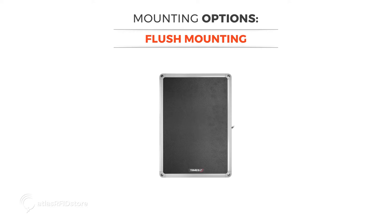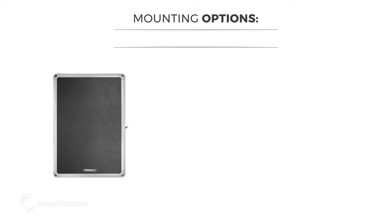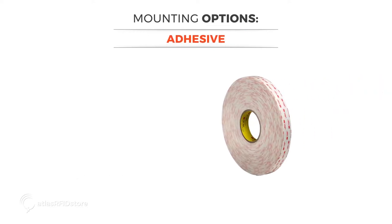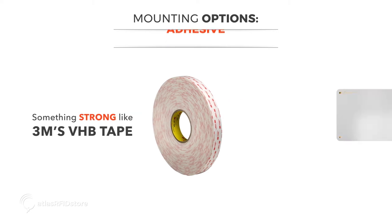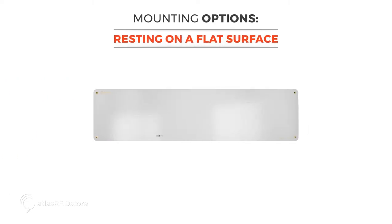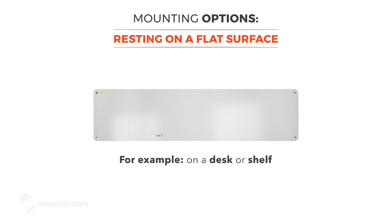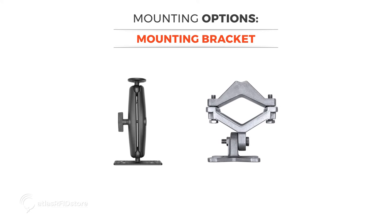First, there are a few different mounting options for RFID antennas: flush mounting, adhesive, resting on a flat surface, or mounting to a wall or pole using a mounting bracket.